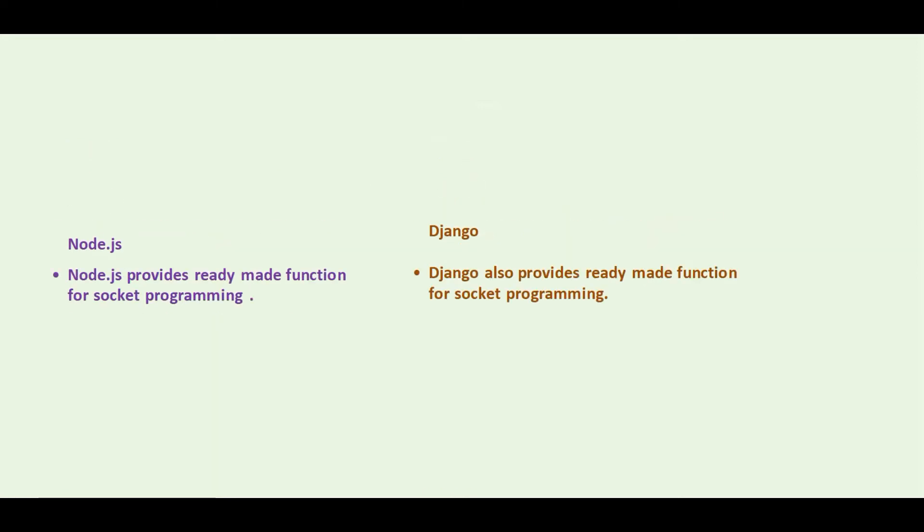Node.js provides readymade functions for socket programming. Similarly, Django also provides readymade functions for socket programming.